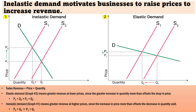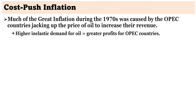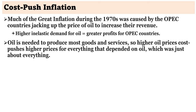Inelastic demand motivates businesses to raise prices to increase revenue. When demand is elastic, then increasing supply will actually increase revenue because P2 multiplied by Q2 is less than P1 multiplied by Q1. But when demand is inelastic, then the exact opposite occurs — revenue can actually be increased by decreasing supplies from S2 to S1. Much of the inflation that occurred during the 1970s was caused by the OPEC countries when they decided to raise the price of oil to increase their revenue. Because the demand for oil was inelastic, the OPEC countries could increase both their revenue and profits by raising prices. Oil is needed for the production of most goods and for the provision of most services, so increasing the price of oil increased the price of just about everything that depended on oil.